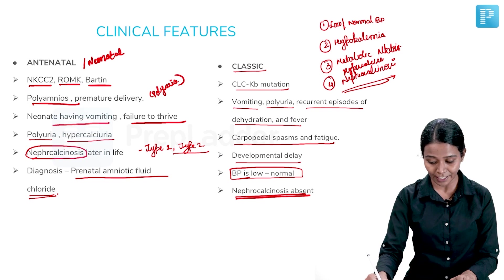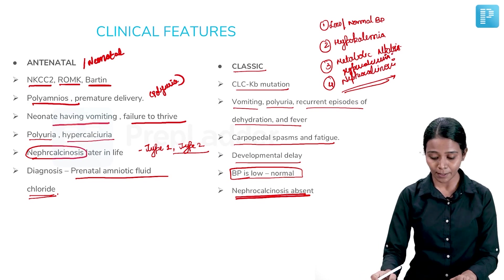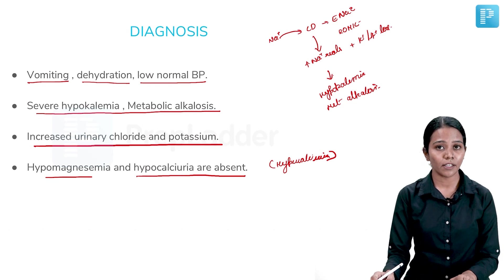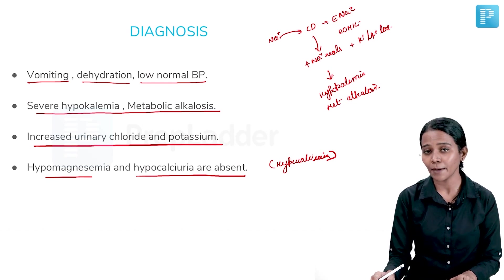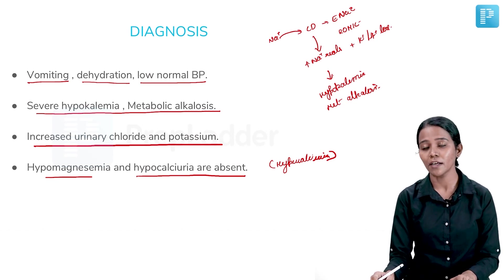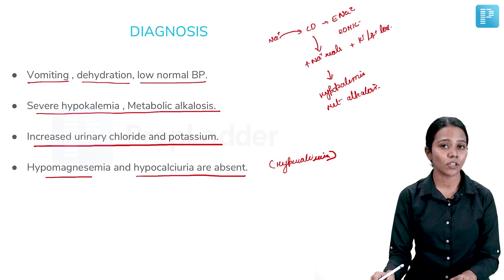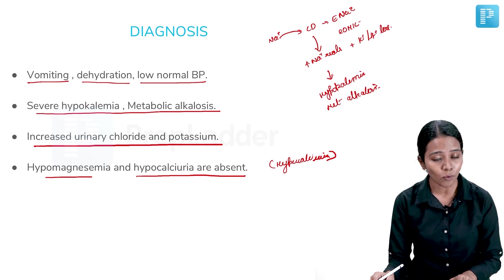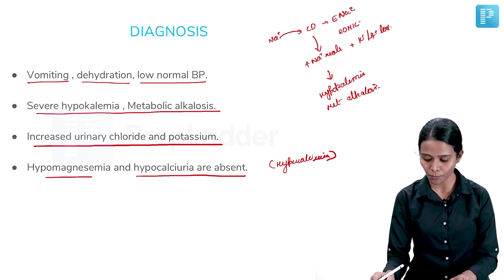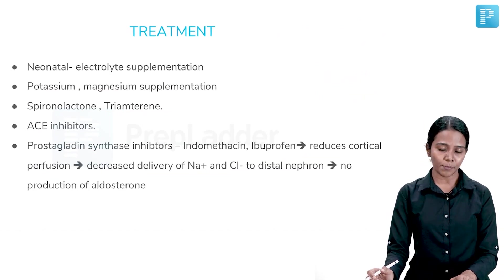Hypomagnesemia is characteristic of Gitelman syndrome. So if a question features hypomagnesemia, the answer should favor Gitelman syndrome over Bartter syndrome.